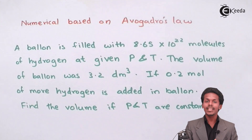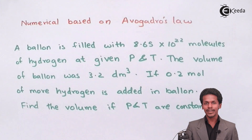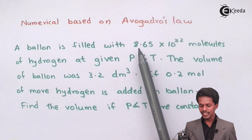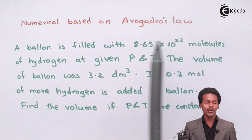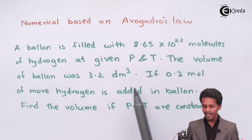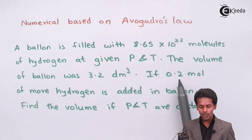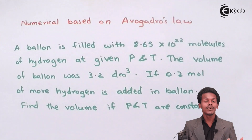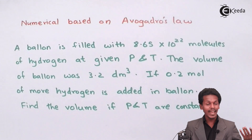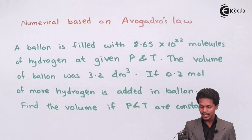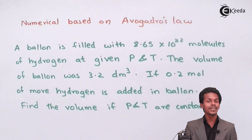then find the new volume if pressure and temperature are kept constant. What we should note is that in both cases the same gas, hydrogen gas, has been used but the conditions are different. Initially, the number of particles — that is, number of molecules — was given as 8.65 × 10²² with a volume of 3.2 dm³. Then 0.2 moles of more hydrogen is introduced, and we have to calculate the new volume at constant pressure and temperature.